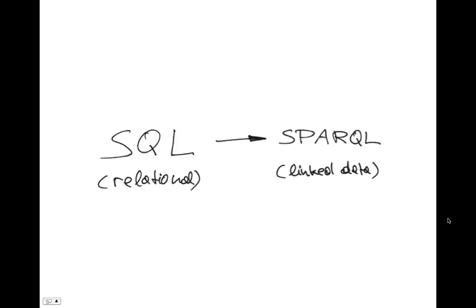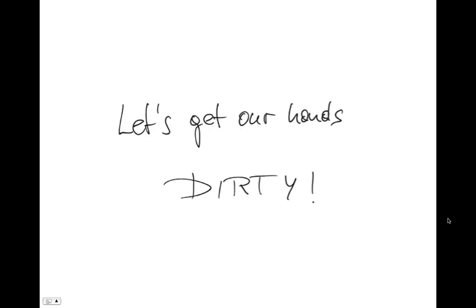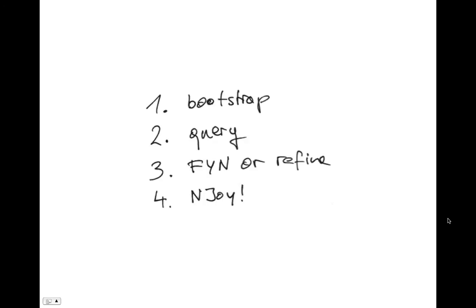From the relational world there is SQL. And because we're cool, we also have something like that — it's called SPARQL in the linked data world. Let's get our hands dirty now. First, we have to bootstrap — we have to jump into that semantic space, that typed link space. Then we can query using SPARQL, follow our nodes through the data or refine the query. And finally, we enjoy.